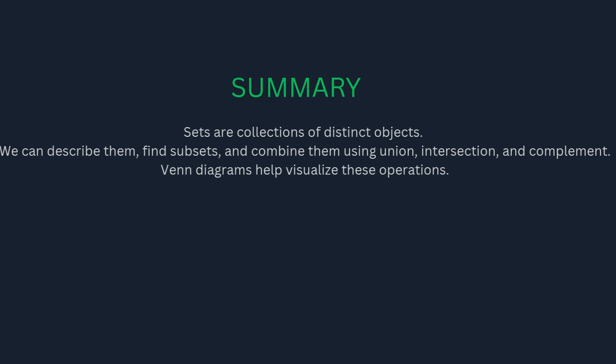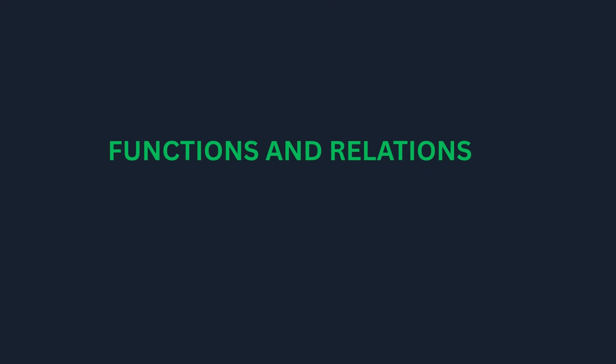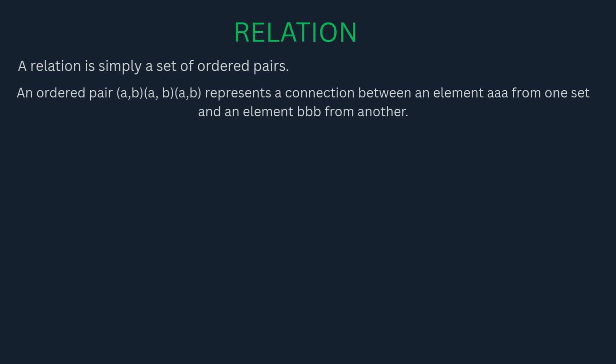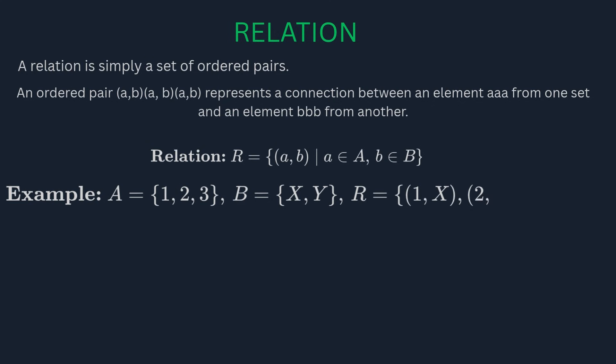Next up we have functions and relations. These concepts describe how elements from one set are connected to elements in another. Let's start with relations. A relation is simply a set of ordered pairs. An ordered pair is a pair of elements, say (a, b), where the order matters. For example, if set A is {1, 2, 3} and set B is {x, y}, the relation R could be the set of pairs {(1, x), (2, y), (3, x)}. This relation connects 1 to x, 2 to y, and 3 to x.